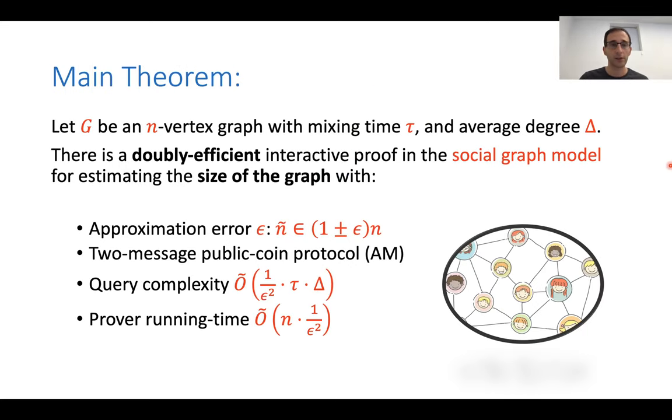So what is our main result? Our main theorem is the following. You give me some graph G. It's an N vertex graph. It has mixing time tau. I'm going to talk and define mixing time later, but for now it's more or less how many steps you need to take in the graph to get close to the stationary distribution. And it has average degree delta.